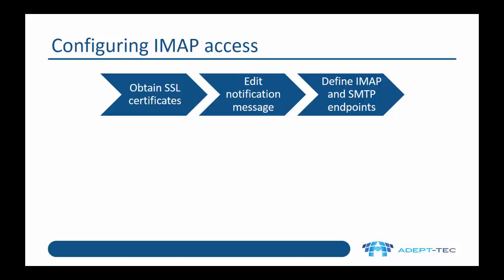Let's now look briefly at how to configure IMAP access. You'll see this in more detail if you view the demo which goes along with this video. First of all, you'll want to obtain an SSL certificate from a public certificate authority. IMAP is an inherently insecure protocol, so it's very important to implement SSL.